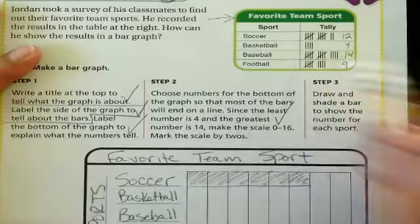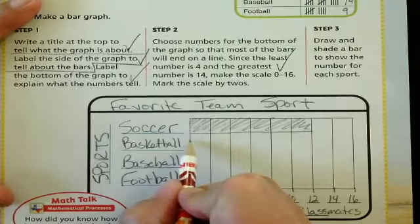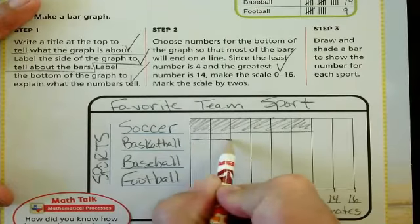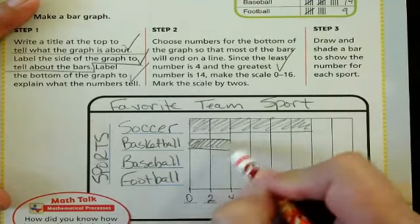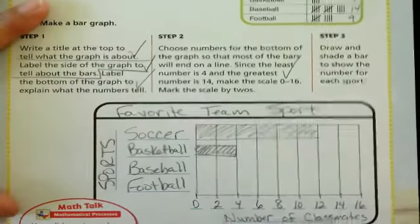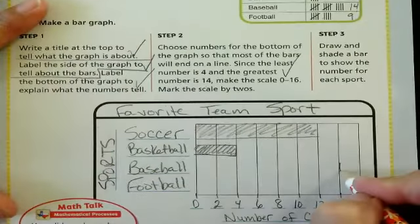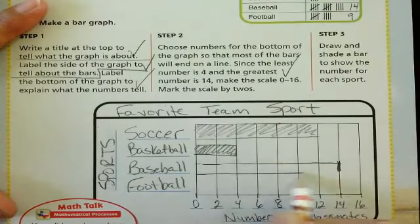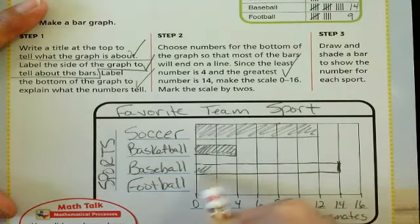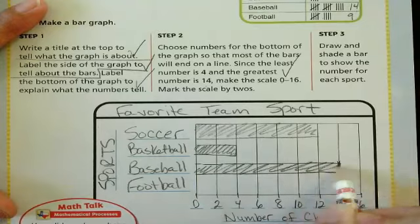How many basketball? Four basketball. So here's basketball and it's only going to go to four. How many did baseball have? Baseball had the most at 14. Here's my line for 14. So I'm going to draw all the way out to my line. And I'm going to shade it in so that I know that that's my line.